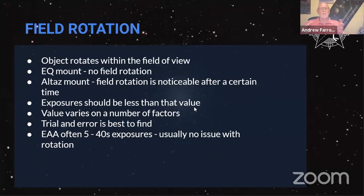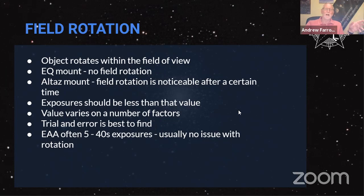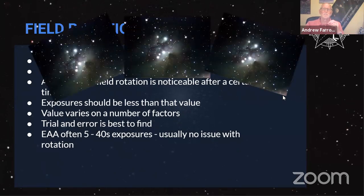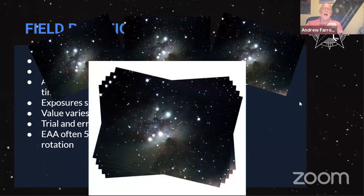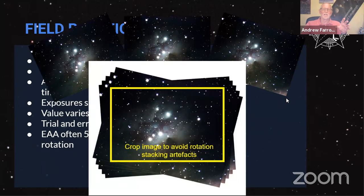Obviously, one issue with an Altazimuth mount is field rotation — you don't get it with an EQ mount, but it can certainly be an issue with Altazimuth. At 40-second exposures I did not have a problem, but much more than that and it certainly begins to show. The software is trying to stabilise the image, and you end up with a bit of fringing around the edges, which is fairly easy to crop away.